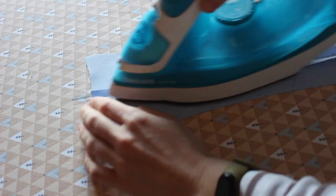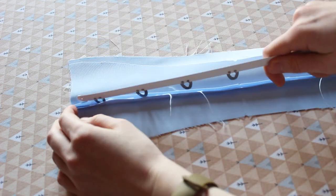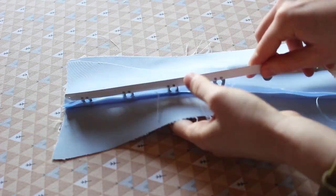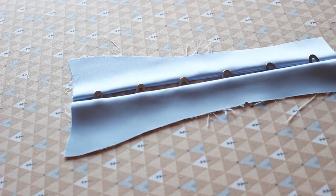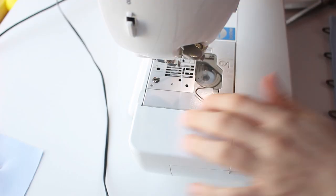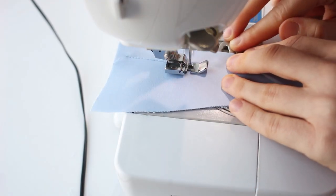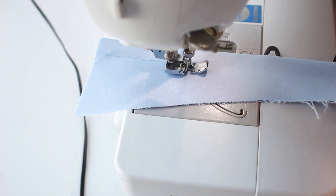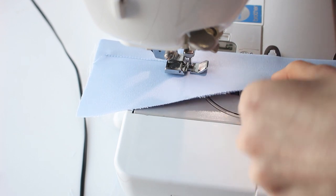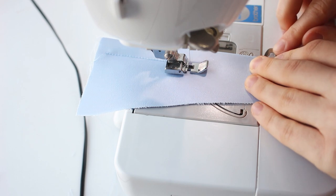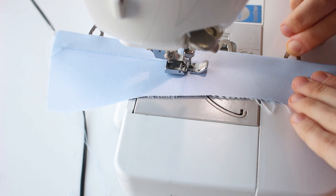I sewed only between the hooks, this way they will be able to stick from the panel. I pressed the seam open, then folded it and pressed again. Then I slipped the busk through the holes. I changed my regular foot to a zipper foot and stitched as close to the busk as possible.